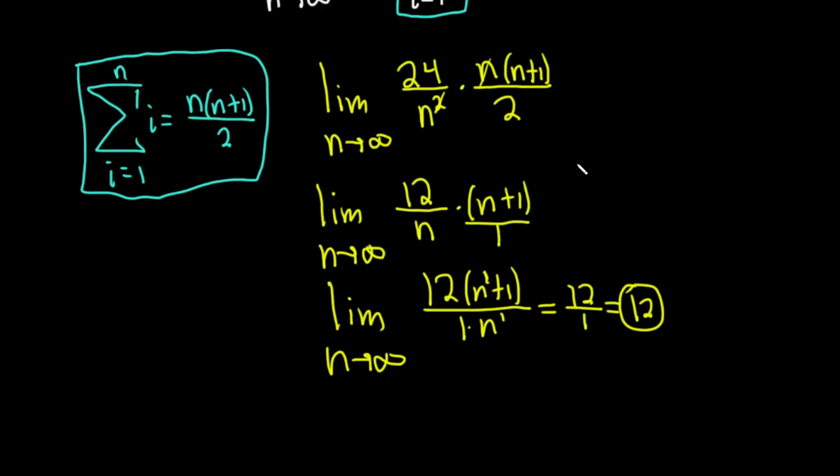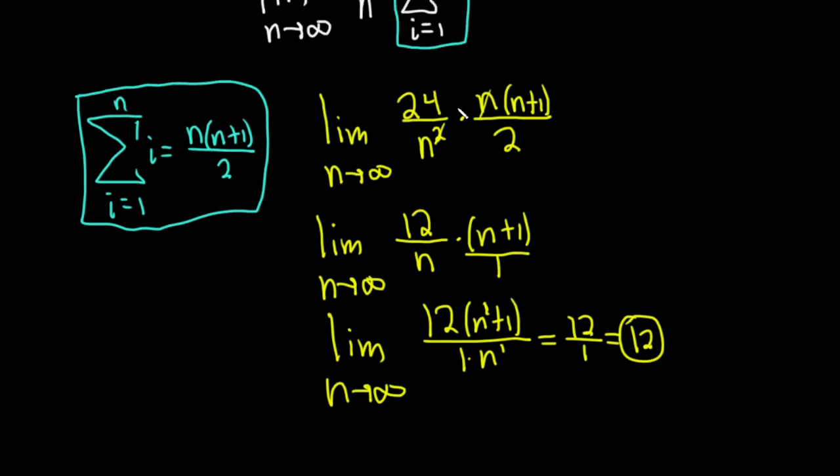So normally, I would just do it up here. From here, you can see it. Without simplifying it, it's basically n squared, n squared. So it's 24 over 2, which is 12. See, typically, that's how you do it. In practice, you don't do all of this.